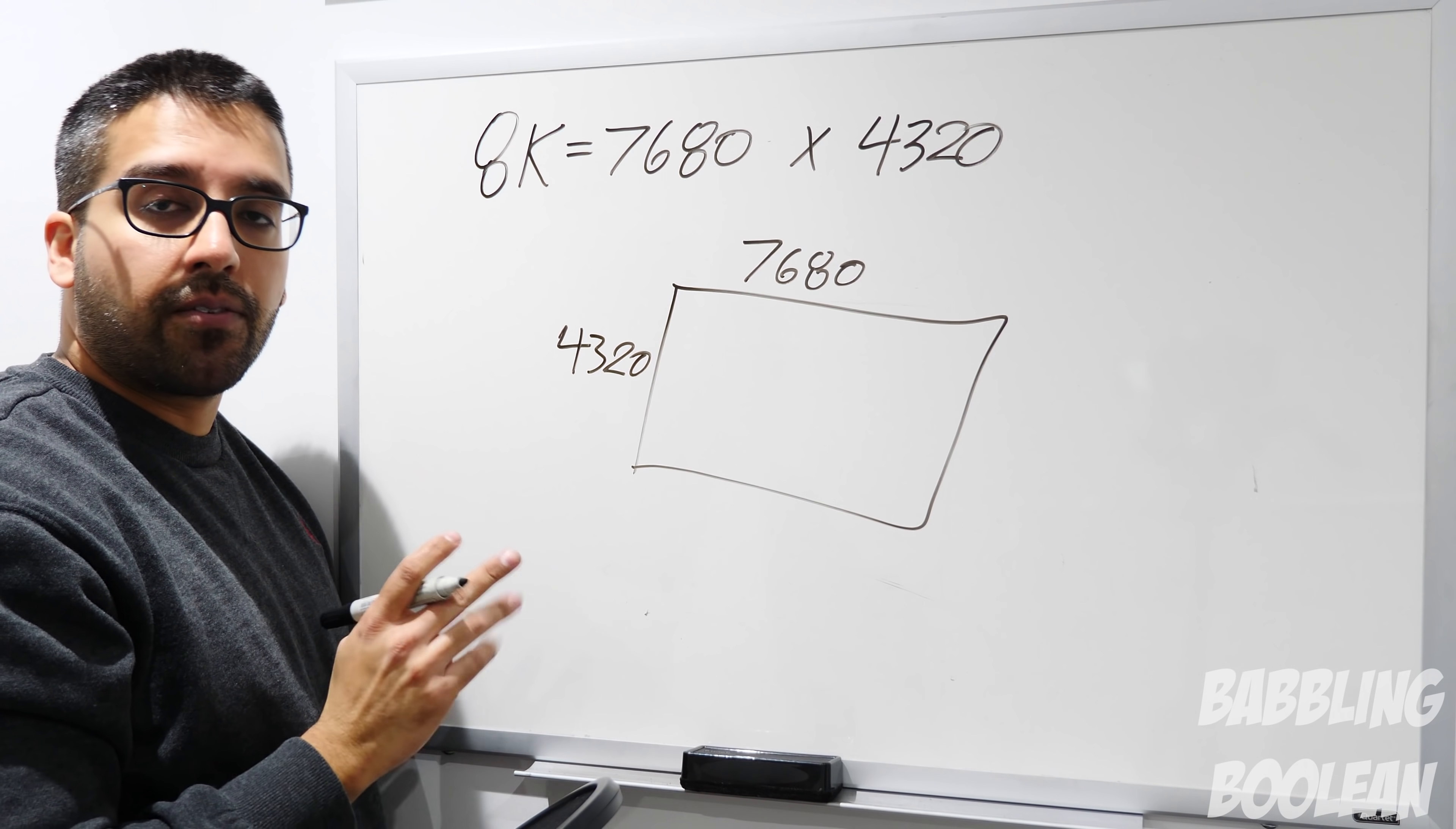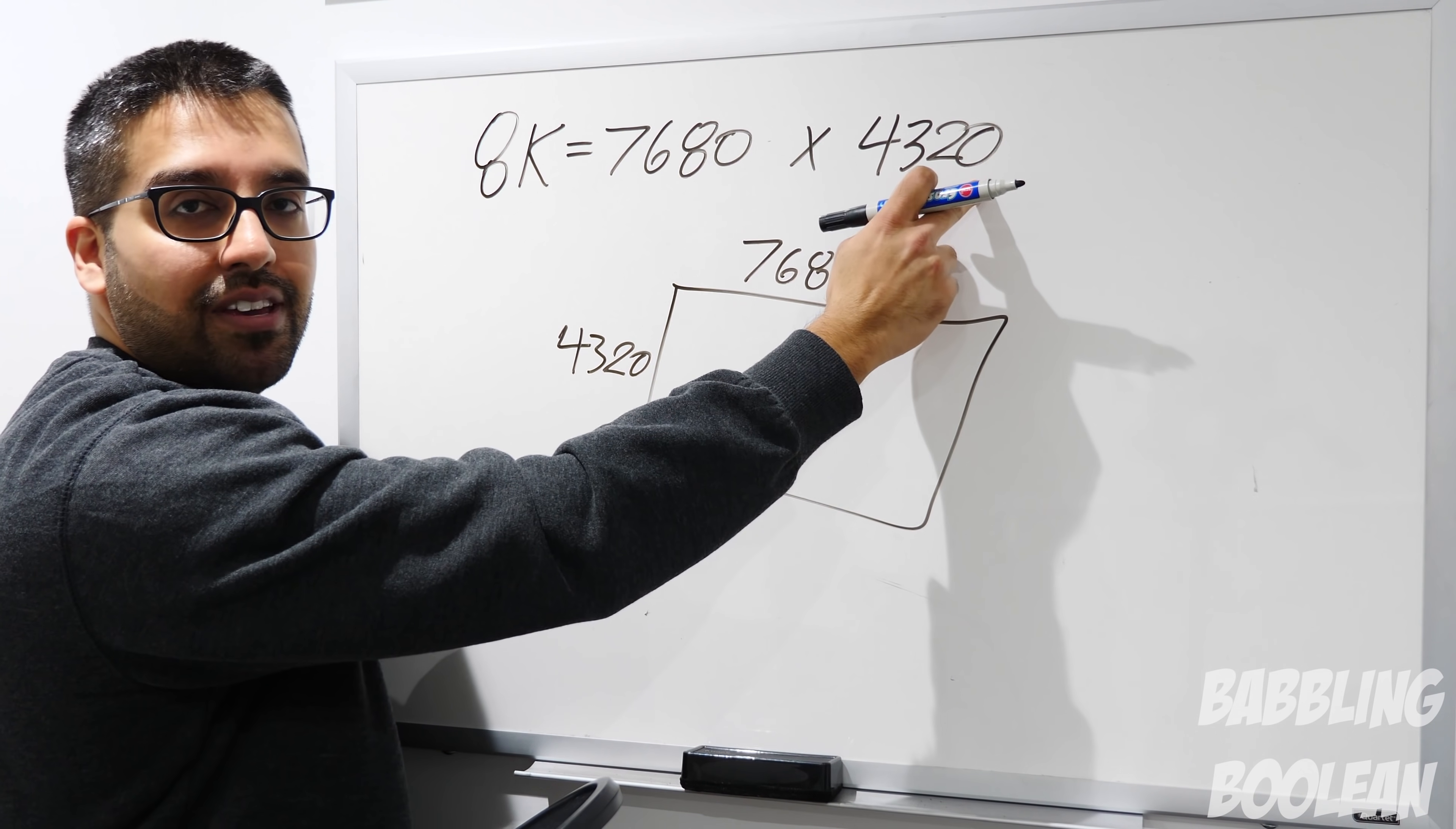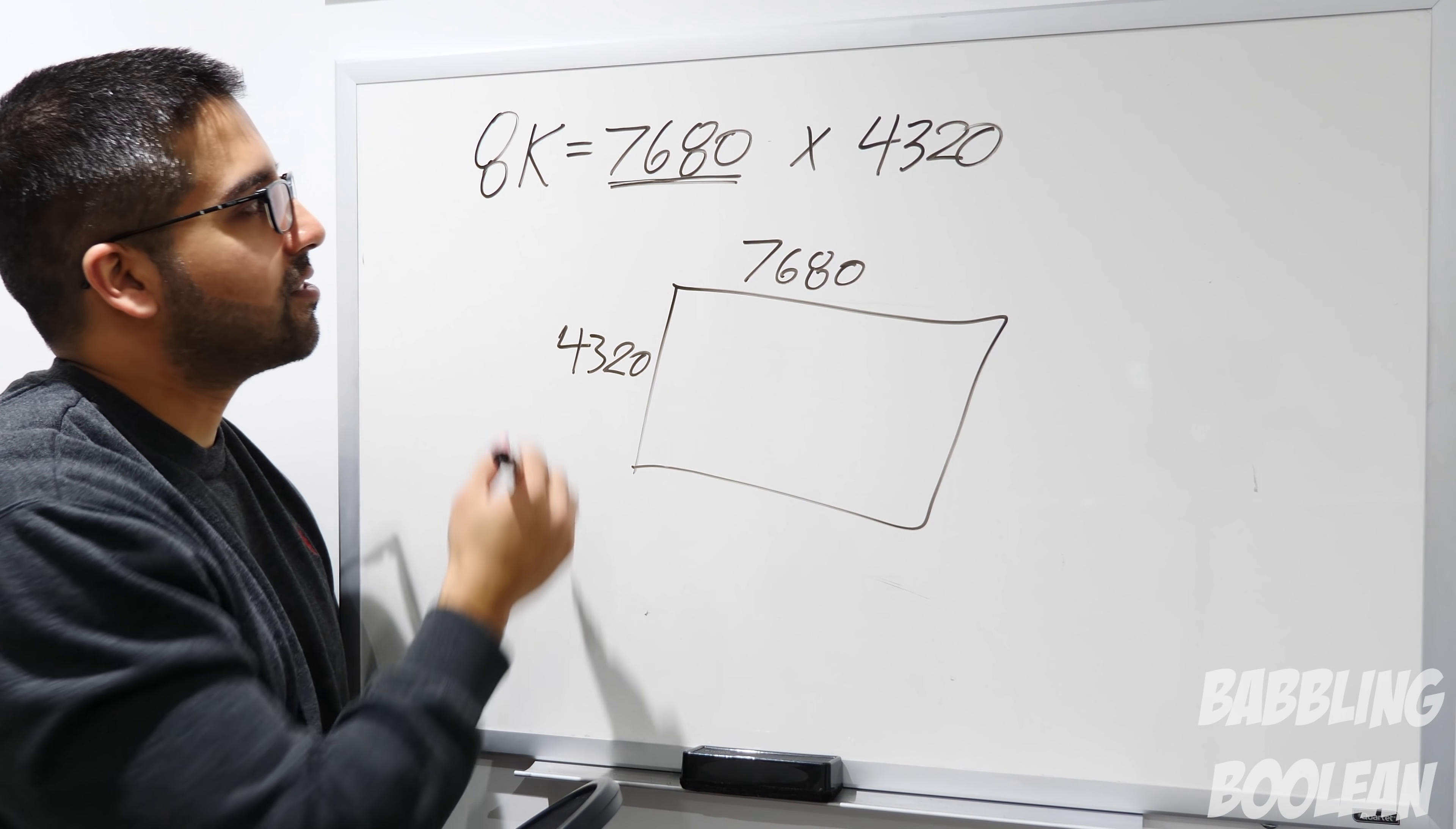Similar concept for 8K. You have 7600 pixels, or 7680 to be precise, going across, and that happens 4320 times. So it's 4320p. That's what 8K would be considered. Again, you'll notice it's not actually 8000, 7600, but no one's going to call it 7.6K. Let's round it up, let's call it 8K. Just simpler that way. More marketing garbage, but that's what it is.